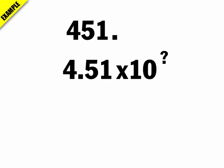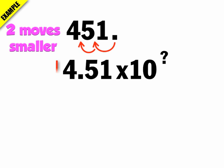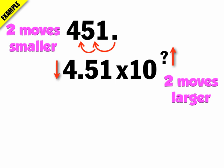Let's start with 451 and convert it to scientific notation. When you see a whole number, think of the decimal point as being on the right. Scientific notation has one digit to the left of the decimal, so I've got to make 451 look like 4.51 times 10 to some exponent. I move the decimal two places, making 451 two powers of 10 smaller, so the exponent does the opposite and becomes 10 to the second. The result is 4.51 times 10 to the second.